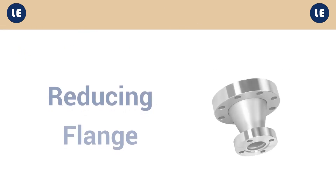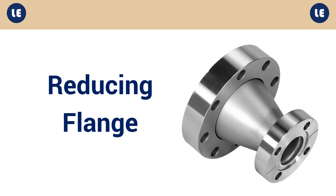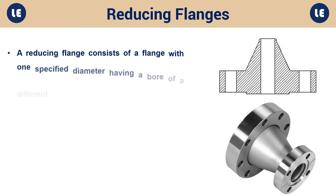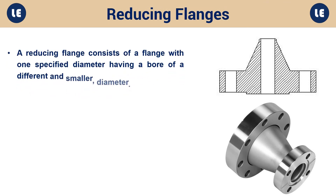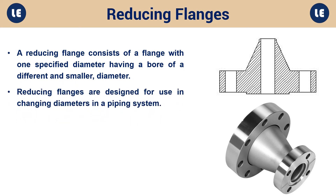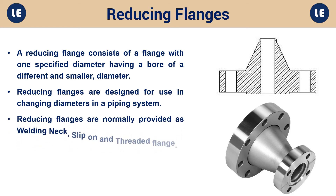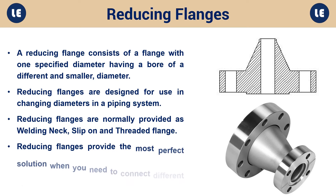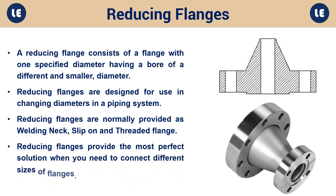Reducing flange: A reducing flange consists of a flange with one specified diameter having a bore of a different and smaller diameter. Reducing flanges are designed for use in changing diameters in a piping system and are normally provided as welding neck, slip-on, and threaded flange. Reducing flanges provide the most perfect solution when you need to connect different sizes of flanges.